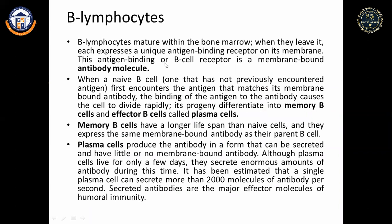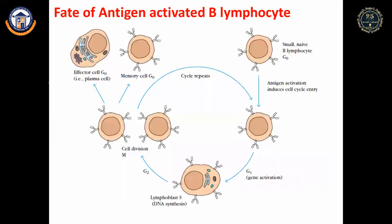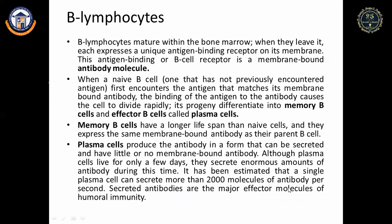B lymphocytes mature in the bone marrow and have B cell receptors. When a B cell first encounters an antigen, it starts its cycle, produces several copies of itself, then differentiates into memory cells and effector (plasma) cells. Memory cells have a longer lifespan; plasma cells have a shorter lifespan but a single plasma cell can secrete more than 2000 molecules of antibody per second. Memory cells play a major role during second antigen exposure.